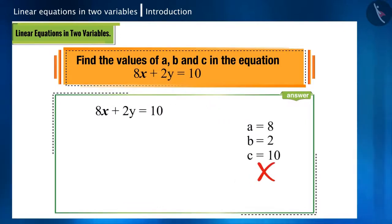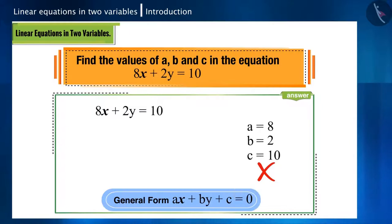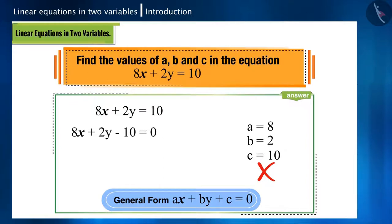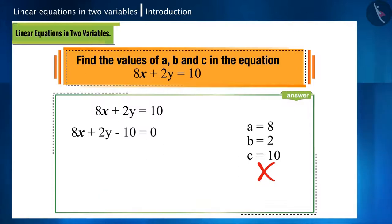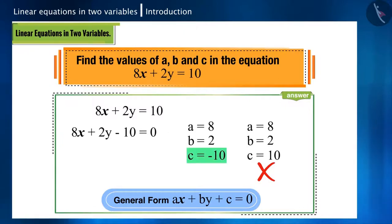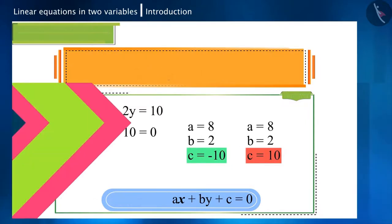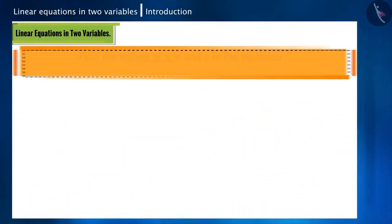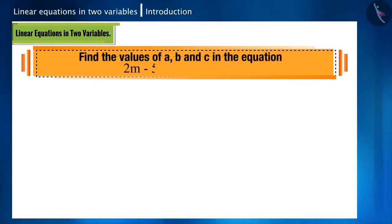First we have to check whether this equation is in general form or not. So we write it as 8x + 2y − 10 = 0. Now we can compare it with the general form, so here a = 8, b = 2, and c = −10, and not c = 10.